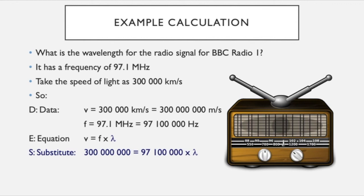S of our DESRA is to substitute in our values, so we've got the speed is 300 million, we've got the frequency is 97 million 100,000, and we've got our wavelength there as well. So that's the thing we don't know, so we've got to rearrange R to find lambda, our wavelength. So we have lambda equals 300 million divided by 97 million 100,000, and then we get to our answer. So our answer for wavelength is 3.09 meters, so the length of a wave for BBC Radio 1 is about 3 meters long.